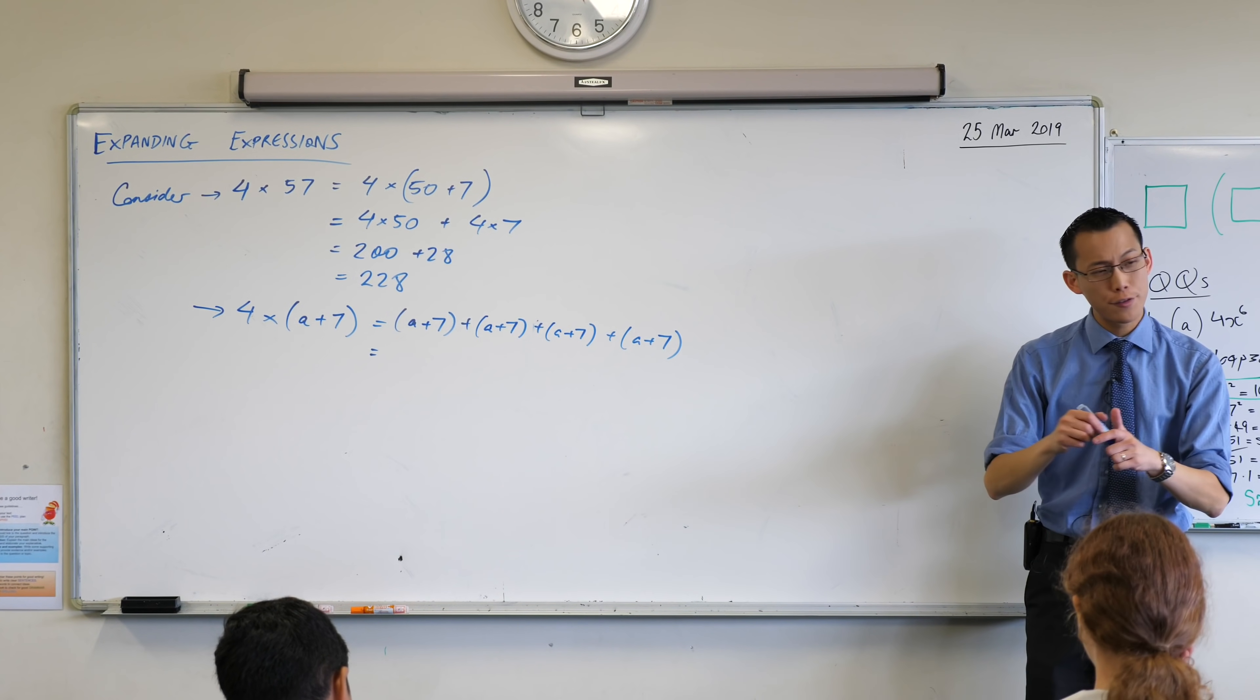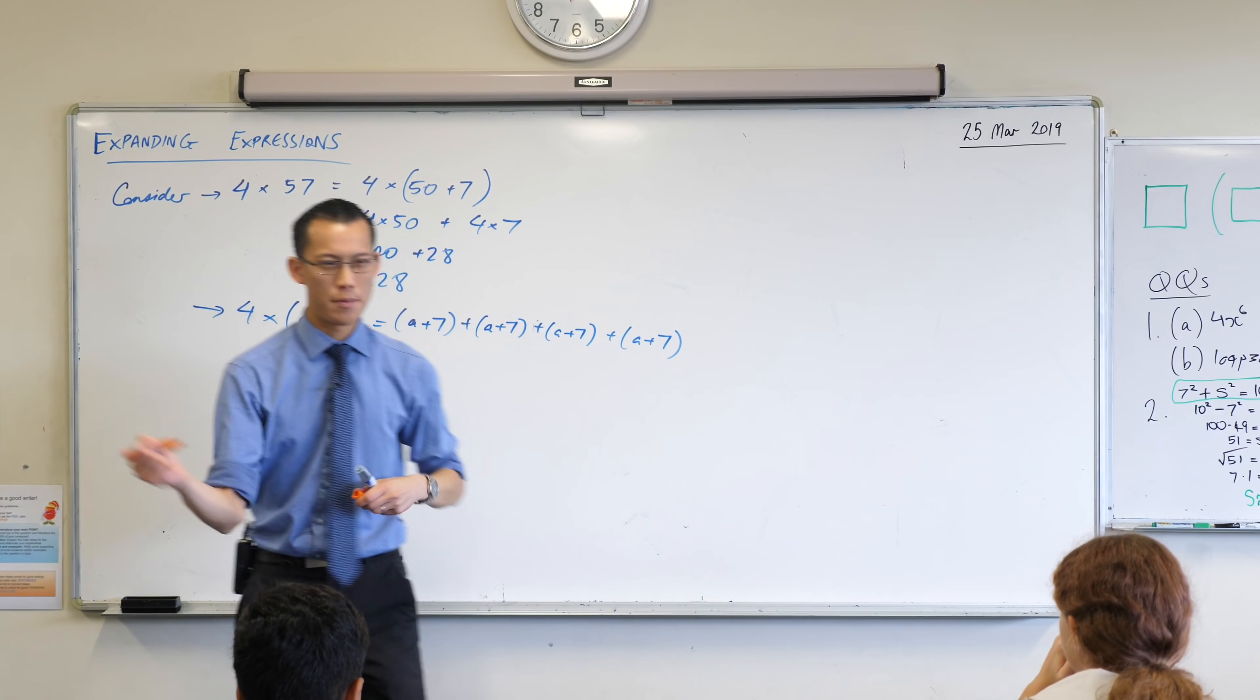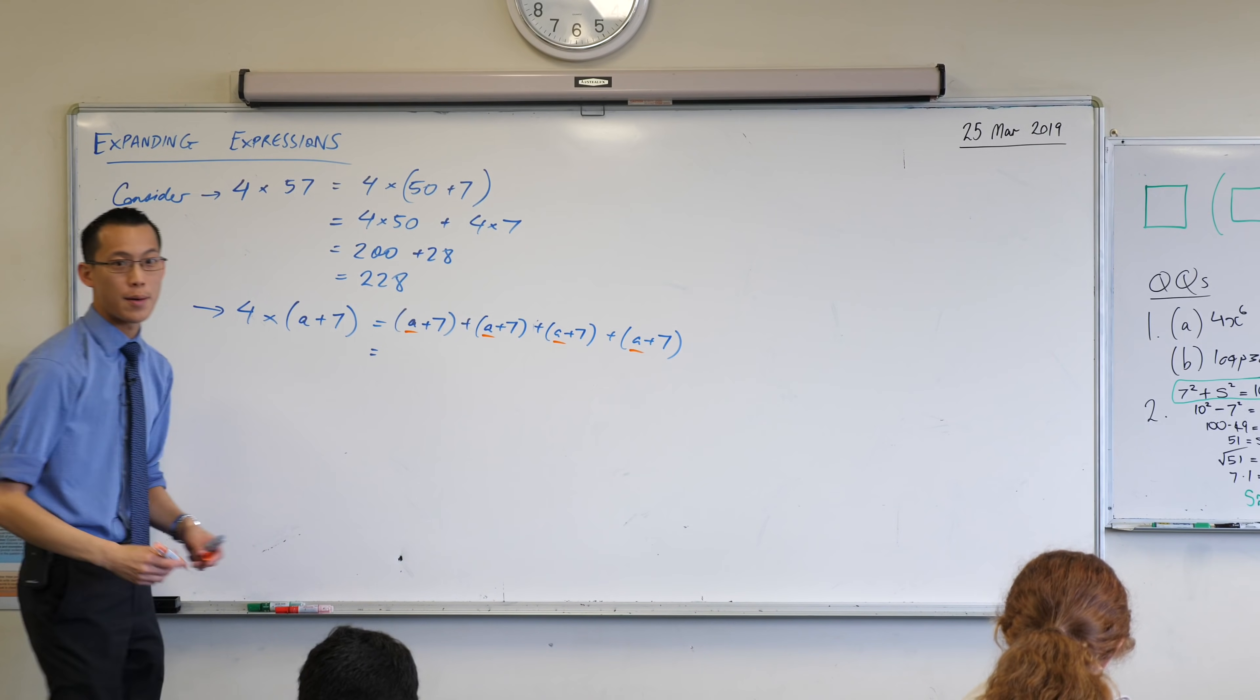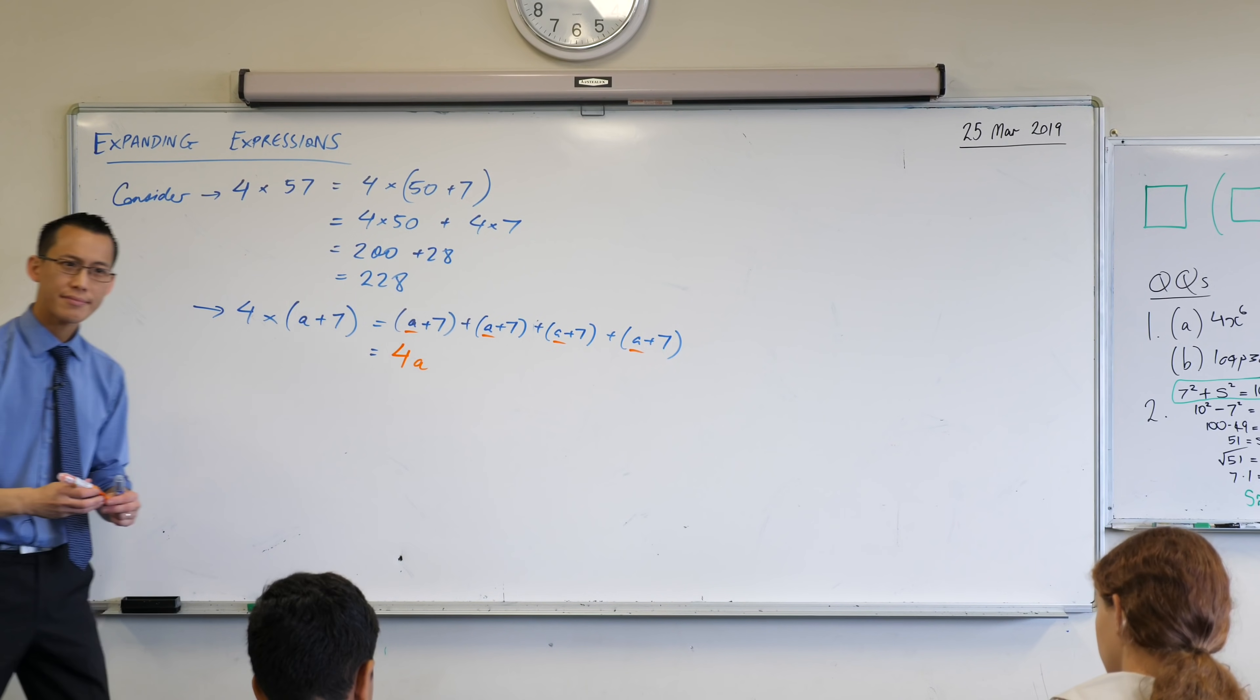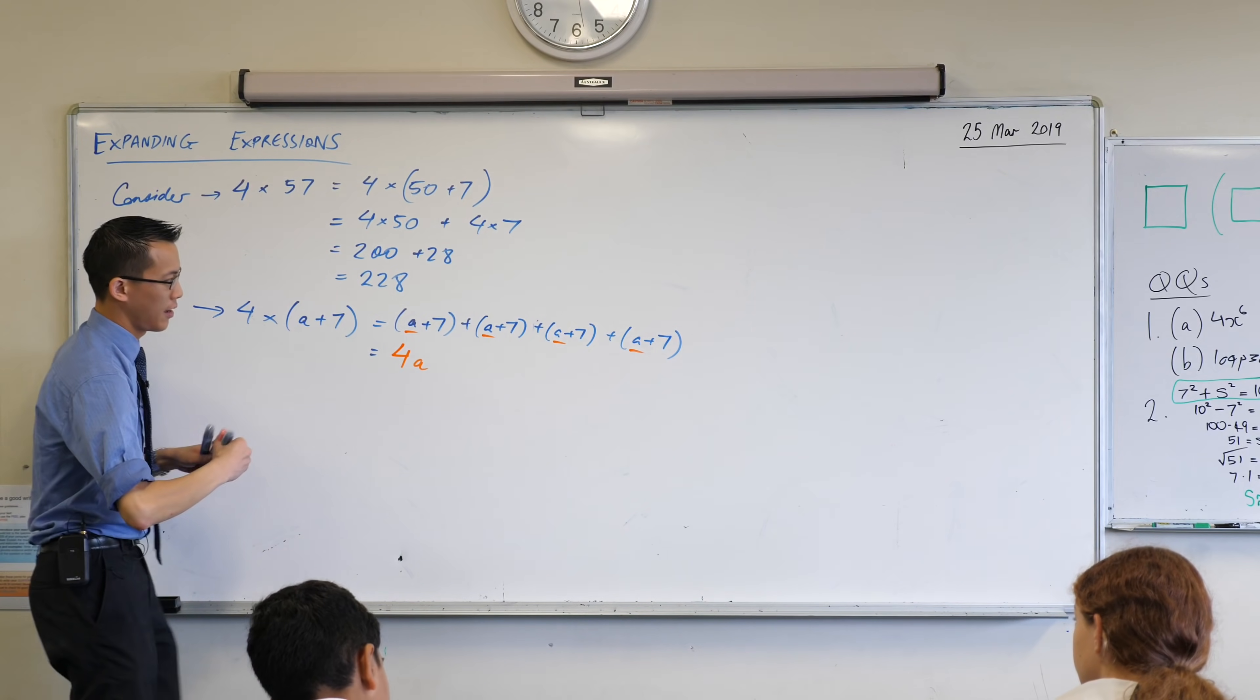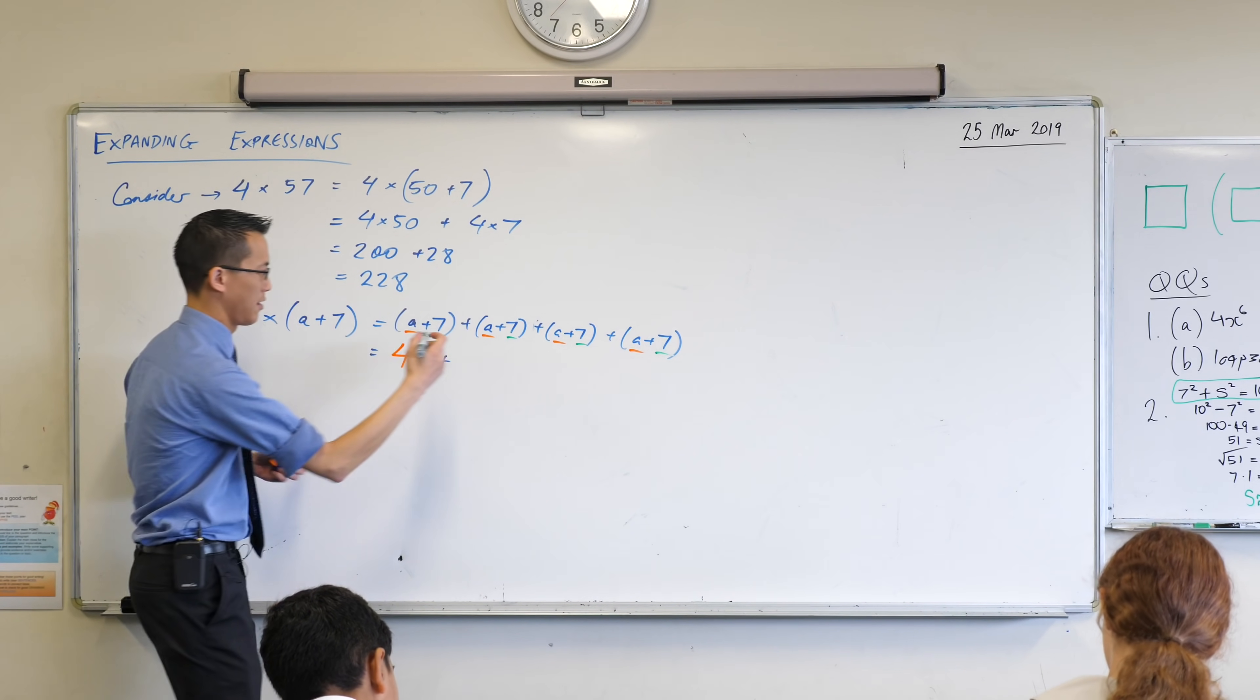So when you have a look at this, you're thinking, wow, that was a lot to write. This is why we're trying to avoid writing it out in long form like this. But more importantly, and if you've got another color there that might be helpful, you can see there's a whole bunch of terms you can put together. We call this collecting like terms. How many A terms do you see? There are four of them. If you have another color there, I'd love you to highlight them with me. One, two, three, four. Every time we wrote A plus 7, there was an extra A. So I'm going to get four lots of A.